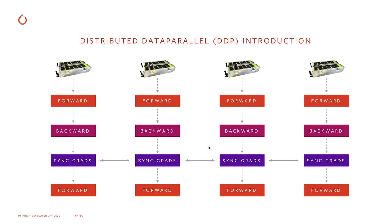Let's take a quick refresher of Distributed Data Parallel first. If you have a single model that's small enough to fit on a single GPU, you'd use Distributed Data Parallel to train this at large scale in terms of a large amount of data and large amount of GPUs. You'd replicate this model on multiple GPUs, run the forward and backward pass in parallel. And then once you have the gradients, you'd have a synchronized gradients operation which all of the ranks will enter to aggregate all of the gradients. Then you'd continue other iterations where you run more forward and backward passes and synchronized gradients.